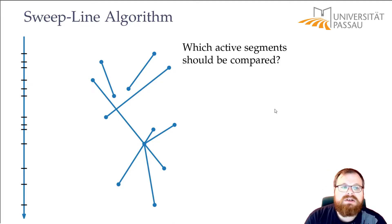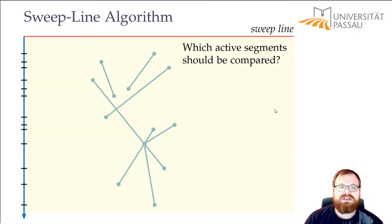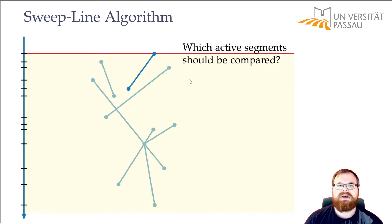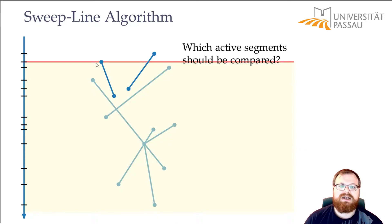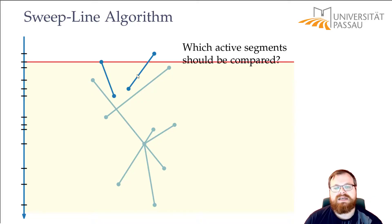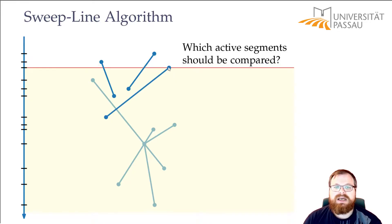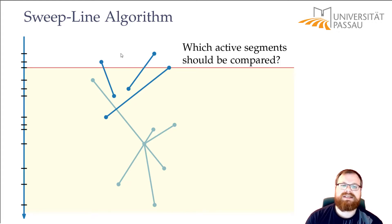Let's look at an example of how a sweep line proceeds. We start at the very top and move it downwards until it hits the very first segment — now this is an active segment. We keep moving, hit the next segment, and now this is also active. Clearly we can compare these two segments and figure out if there is an intersection between them. In this case there is not, so we proceed. Now we've hit the next segment and we have three active segments.